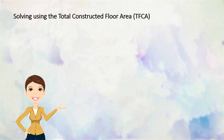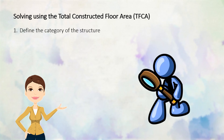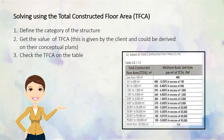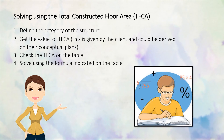The next method is solving using the total constructed floor area, or TFCA. Here are the steps. First, define the category of the structure. Next, get the value of TFCA which is given by the client and could be derived from conceptual plans. Third, check the TFCA on the table. And lastly, solve using the formula indicated on the table.